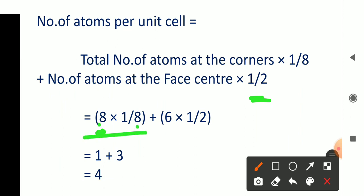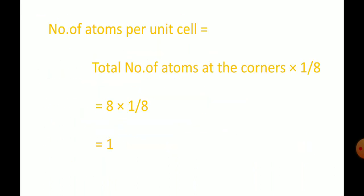The number of atoms per unit cell equals: eight corners into one-eighth, plus six face center atoms into one-half. Eight into one-eighth equals one, and six into one-half equals three. So one plus three equals four. In the case of a face centered cubic system, the number of atoms per unit cell is four.